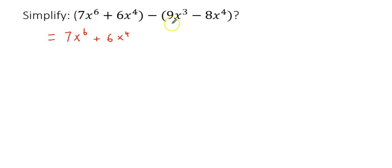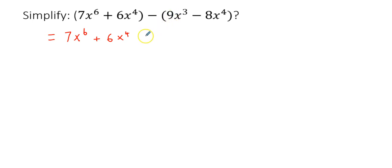Now in the second expression, because of the subtraction sign, I have to change the sign of each term. 9x cubed is positive by default, so I write negative 9x cubed. And the minus before 8x to the power of 4 changes to plus 8x to the power of 4.